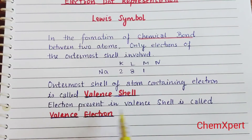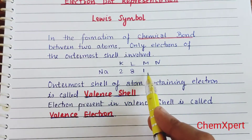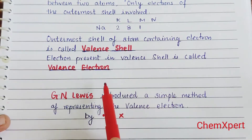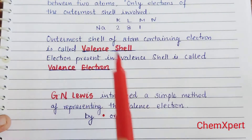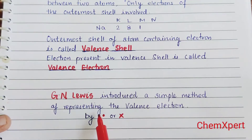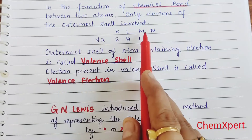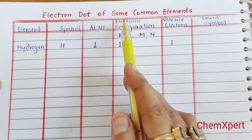The electron present in the valence shell is called the valence electron. The outermost shell is the valence shell and the electron present in it is known as the valence electron. A scientist, G. N. Lewis, introduced a simple method of representing these valence electrons. He gave the Lewis symbol, in which he used these valence electrons represented by a simple dot or a cross, ignoring the inner electrons and using only the valence electrons.